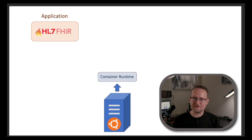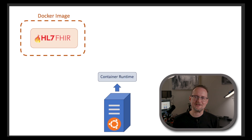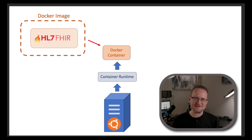Another deployment option is to use containers. Containers are kind of like lightweight virtual machines, and they run in a subsystem called a container runtime. You would then package up your application into a Docker image. A Docker image is kind of like the blueprint for a house — it isn't the real house, but it tells you how to build one. Executing the Docker image gives us a running container. A running container is like taking those blueprints and building an actual house, where the container is the house.